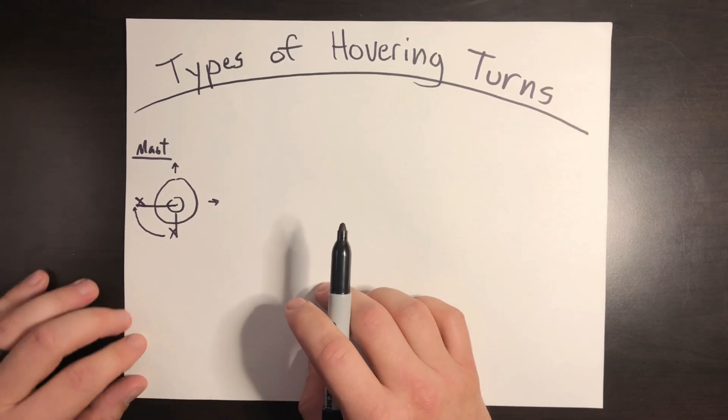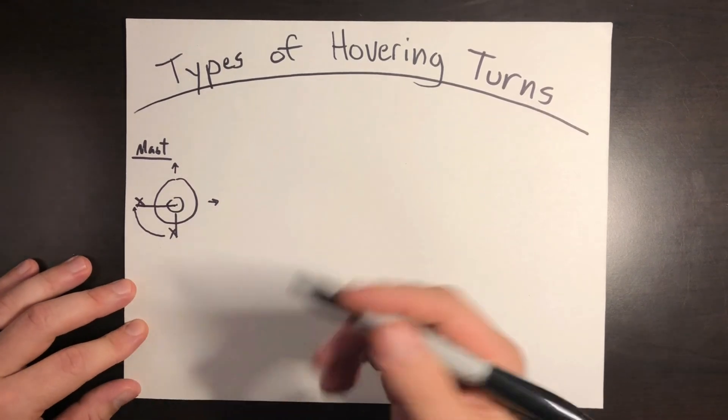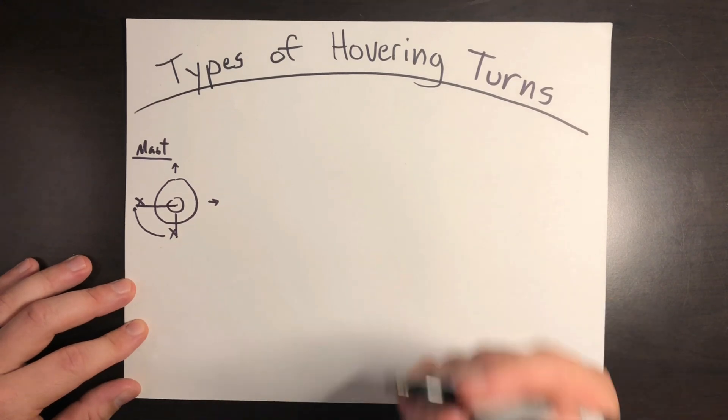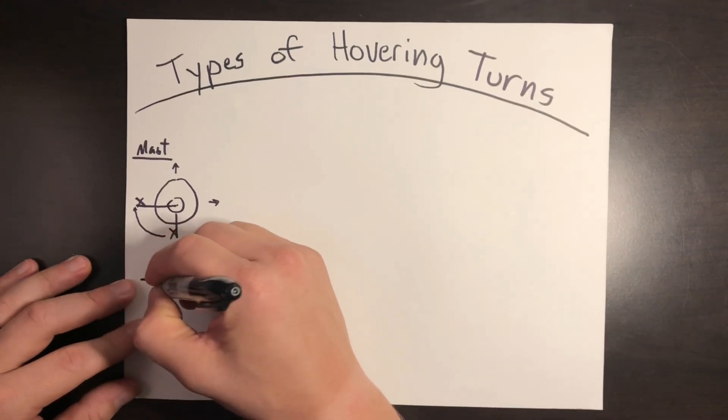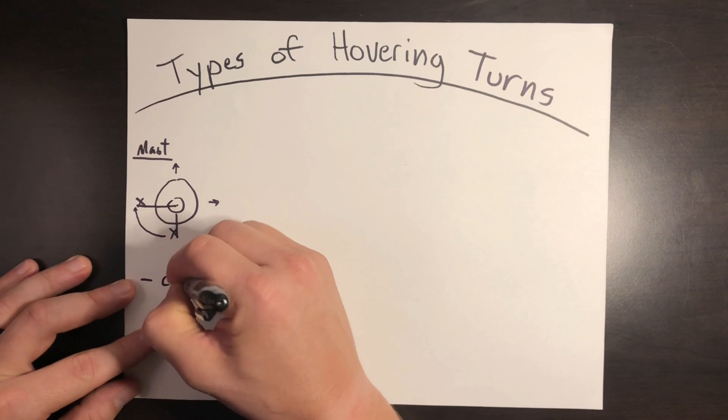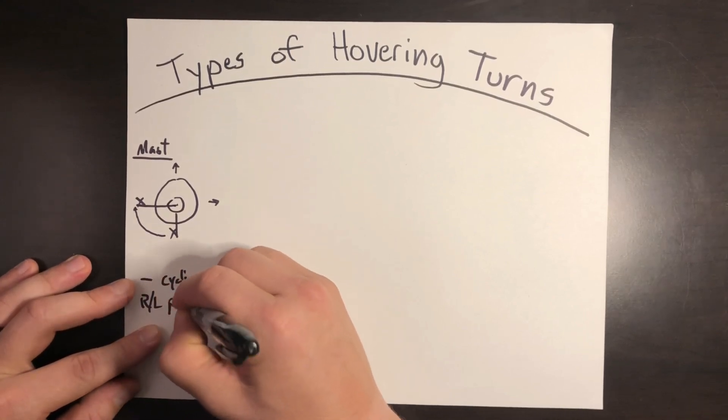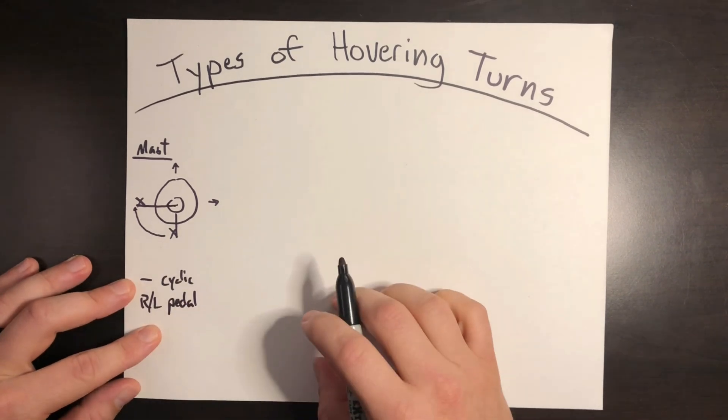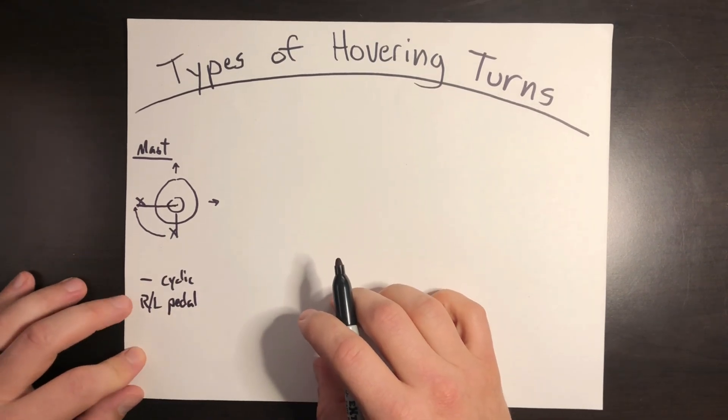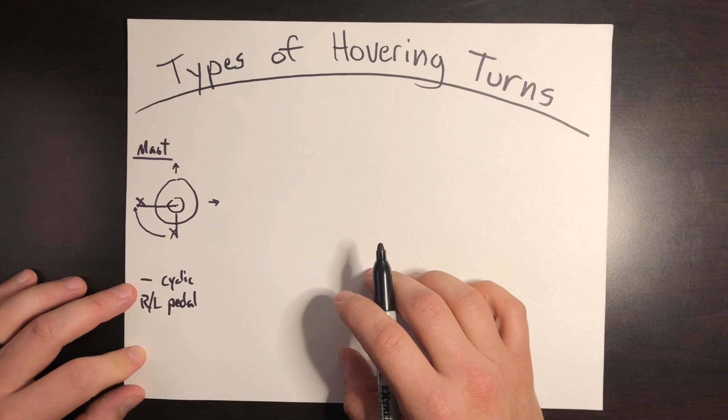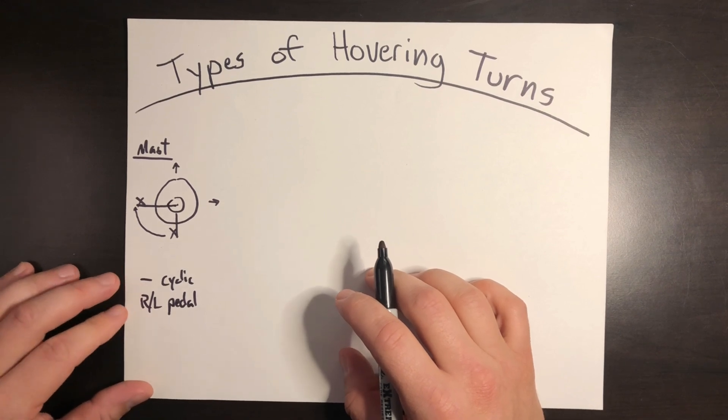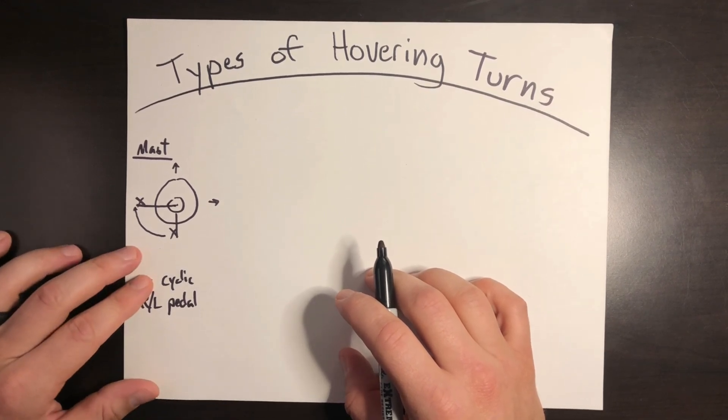In calm winds, the pilot maintains neutral cyclic while applying right pedal to turn right or left pedal to turn left. Pretty cut and dry, pretty easy. The benefit of this type of turn is that it's simple, easy to control, doesn't take a lot of control inputs. It's the most basic type of helicopter turn that you can do.